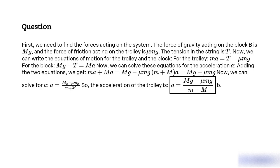Adding the two equations, we get (M plus m)a equals mg minus mu MG. So the acceleration of the trolley is equal to mg minus mu MG, divided by M plus m.